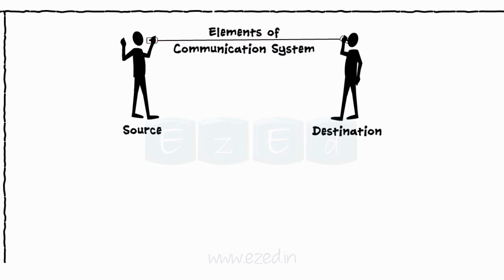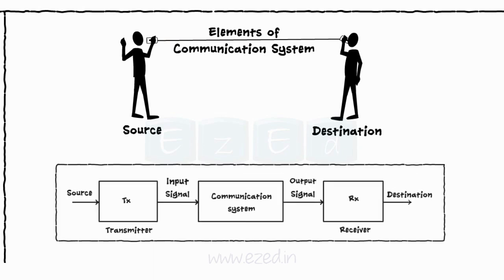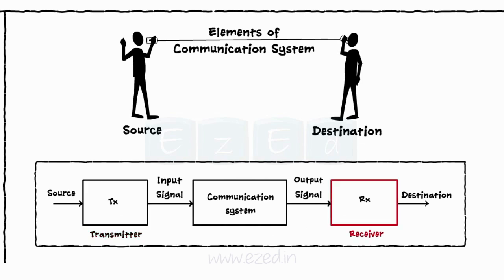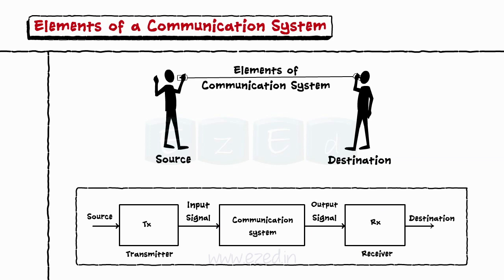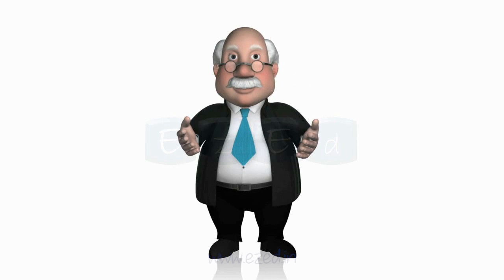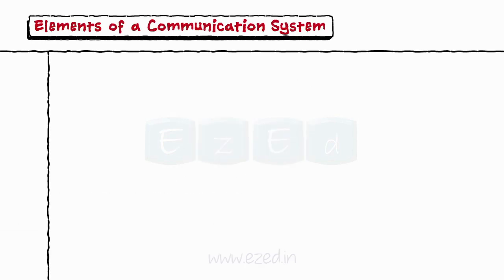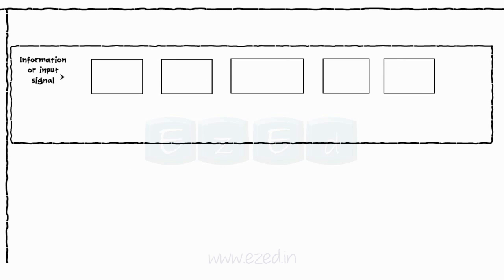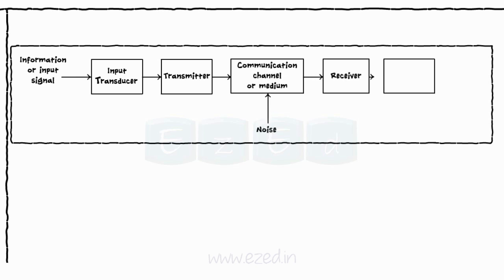Let's see the elements of communication systems. Basic elements of any communication system are the transmitter, receiver, and in between them is a communication channel. The detailed block diagram of a communication system has five basic blocks. The different stages are input signal, input transducer, transmitter, communication channel or medium, noise, receiver, output transducer, and the output.